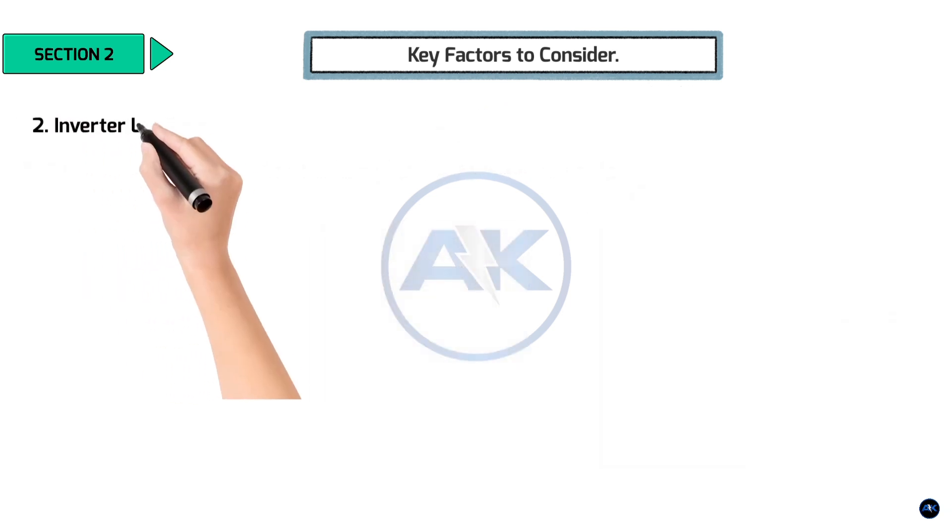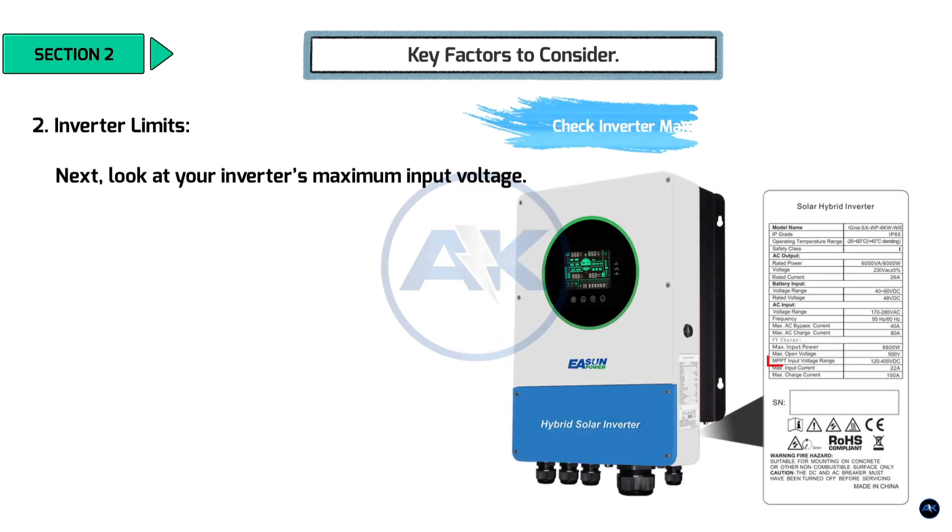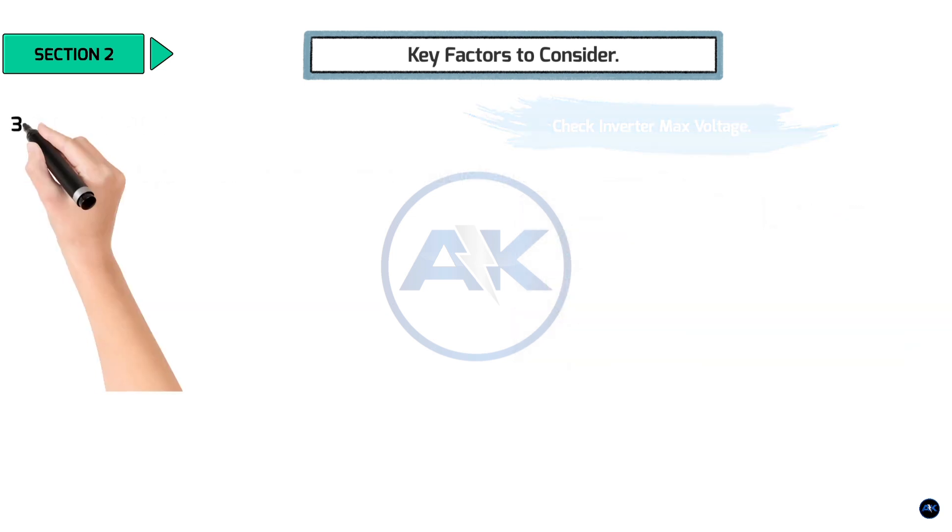2. Inverter Limits. Next, look at your inverter's maximum input voltage. This is the highest voltage your inverter can handle. You'll find this in the inverter's manual or datasheet.